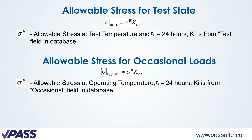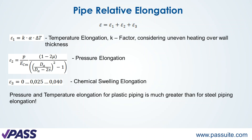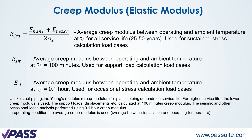The pipe elongation depends on three factors. The first factor is elongation caused by temperature expansion — for plastic material, this elongation is about 10 times greater than for steel piping. The second part is elongation under internal pressure, and the third part is elongation caused by chemical swelling.